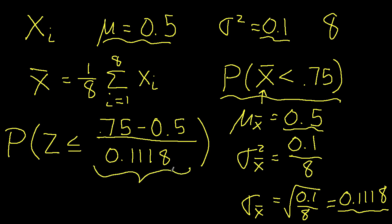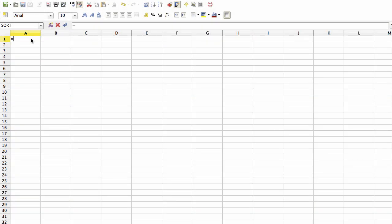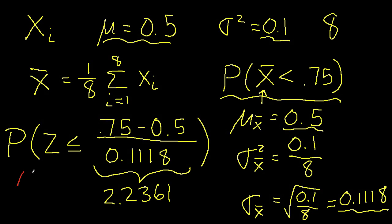And when I calculate this, I get that that value is 2.2361. And I can find this probability now using a spreadsheet as follows. I use the formula equals norm s dist of 2.2361. So what I've just computed is this probability is 0.9873.